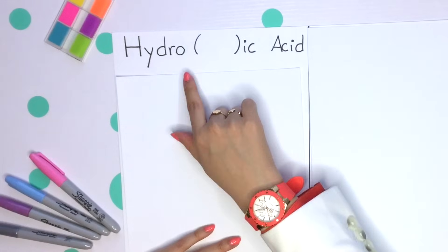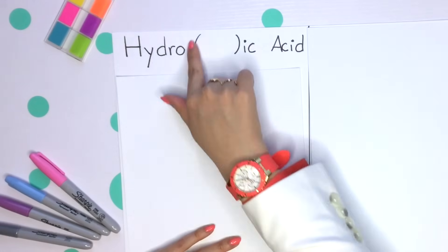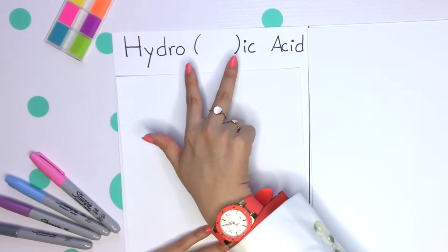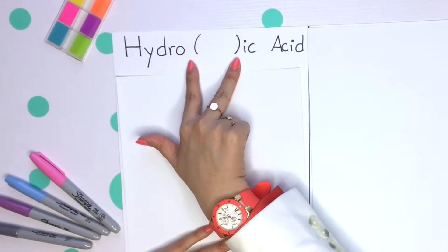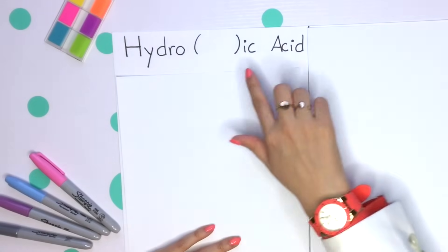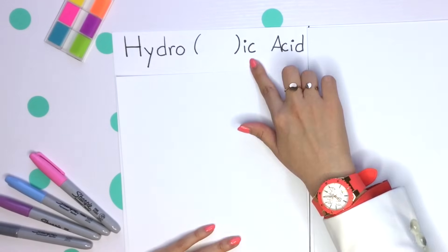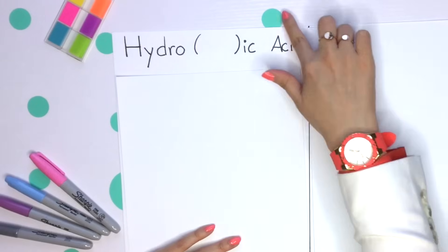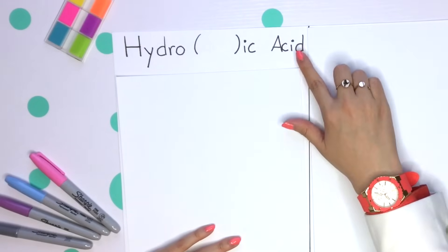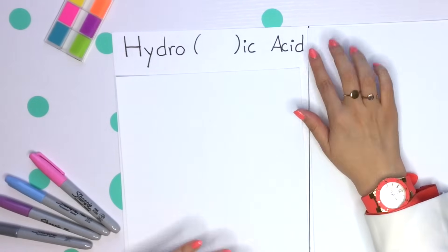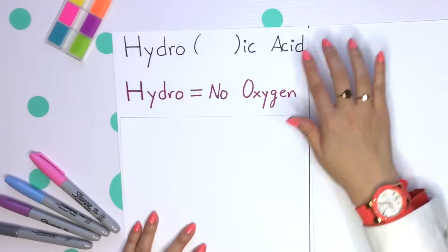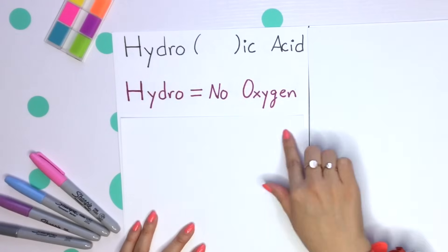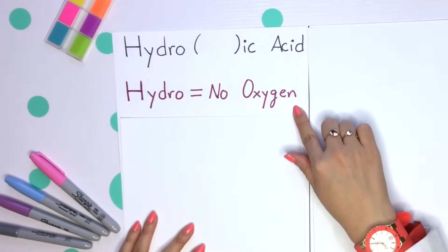Your setup begins with hydro as your prefix. Next we'll have our root name of the element ending in -ic, then acid. The acid tells us that there's a hydrogen in front. Remember, hydro just tells you there is no oxygen.